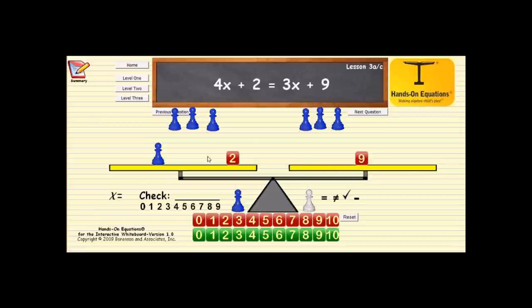Notice that now we have a blue pawn and a two on this side and a nine on this side, so the pawn must be seven, so seven plus two is nine. Let's take this seven and put it over here. x is equal to seven.